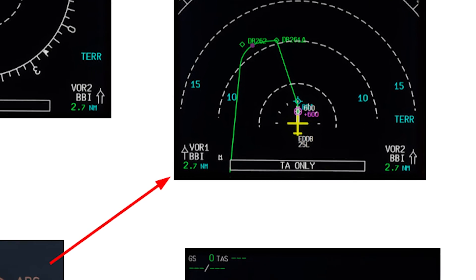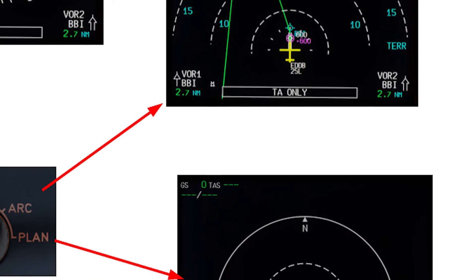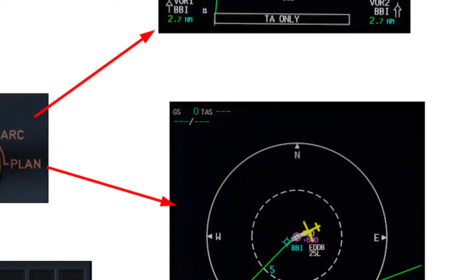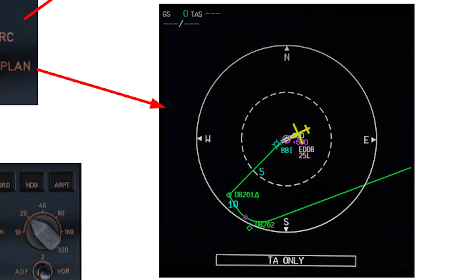The last mode is the so-called plan mode, which is actually referenced to north. This helps you to scroll through the flight plan and check the whole routing that you have inserted into the MCDU.